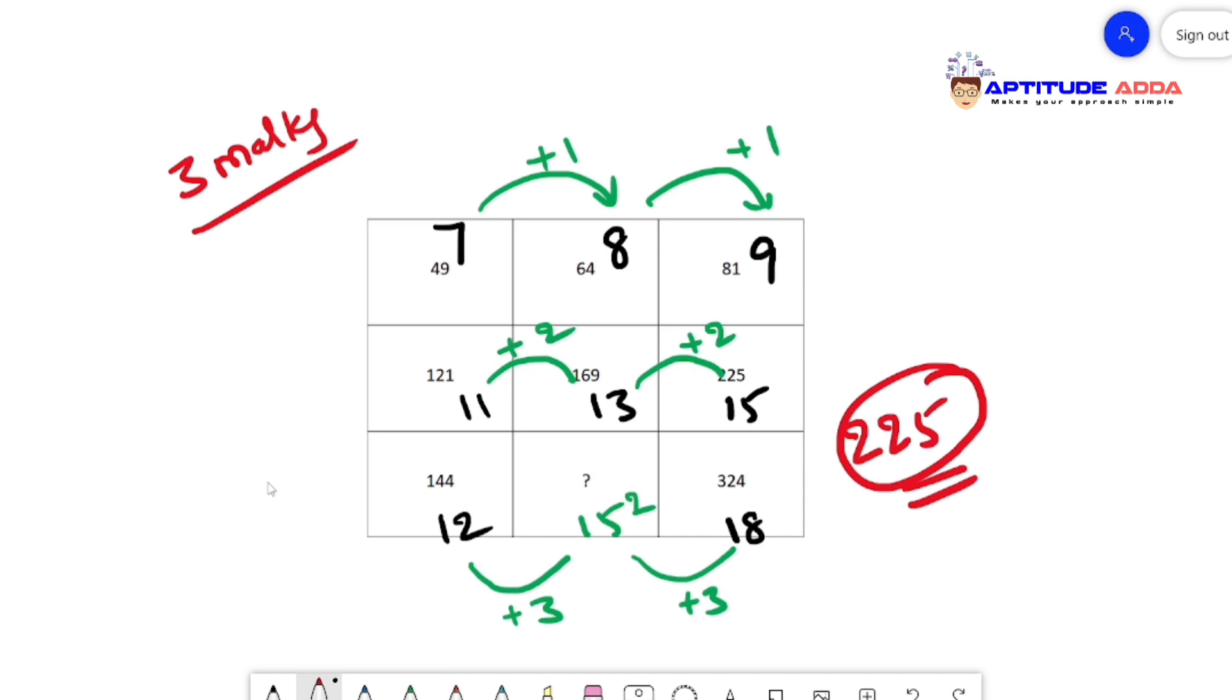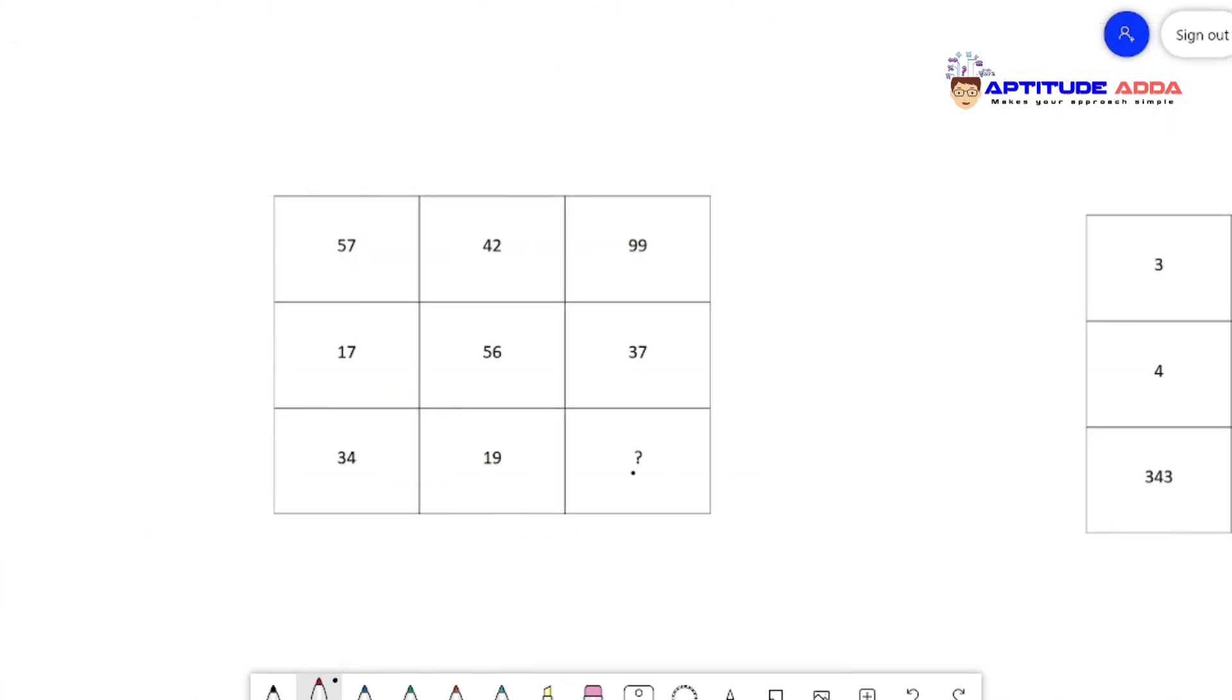As it's a three marks question, let's see one more. When you look at the problem initially it feels very simple - 57 plus 42 gives you 99. But when you try the same for second row, it won't work. 17 plus 56 equals 37? Not possible, it must be more than 56. Then what could be the logic? If you observe carefully, 17 plus 56...